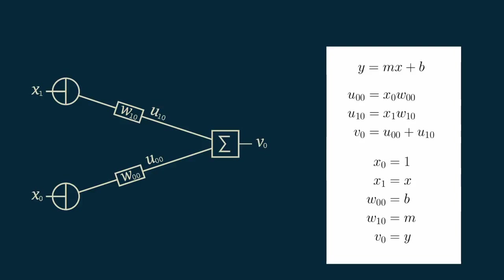At this point, we have turned a straight line equation into a network. A network is anything that has nodes connected by edges. In this case, x sub 0 and x sub 1 are our input nodes. V sub 0 is an output node and our weights connecting them are edges.